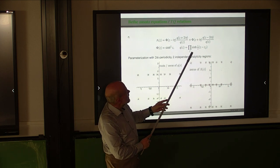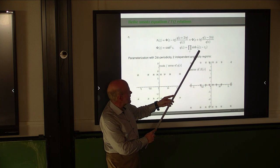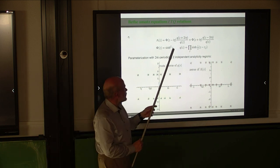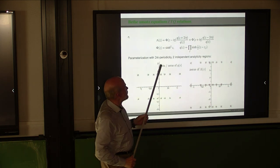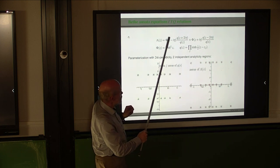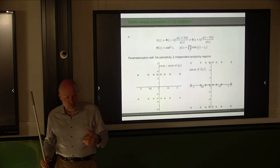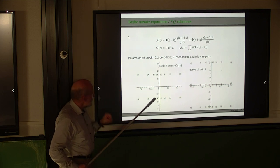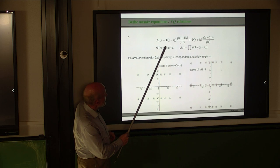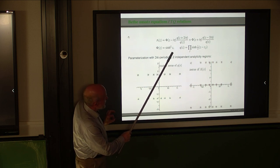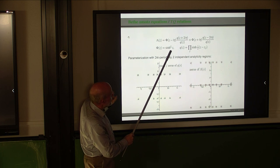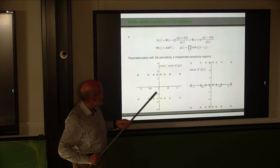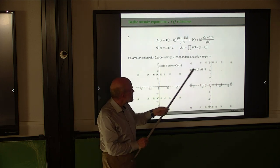Q is a product of hyperbolic sines of one-half the argument minus the Bethe root z_j. We know that these roots have to satisfy certain conditions in order for this function to be analytic. It sums meromorphic terms and we require pole cancellation — these are the Bethe ansatz equations. Note that here appears a power of hyperbolic sine and not hyperbolic sine of the argument divided by 2, so the periodicity of phi is πi and of Q is 2πi.